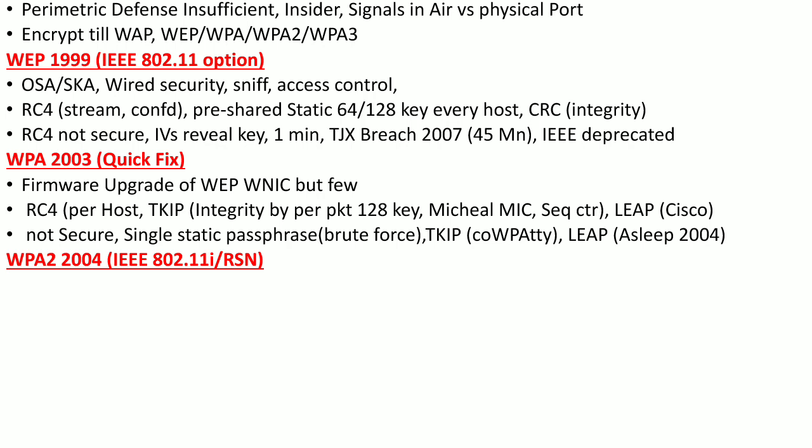WPA2 was introduced in 2004. It is not an enhancement to WPA but a completely different protocol, known as 802.11i or Robust Security Network (RSN). WPA2 uses a 128-bit AES key as part of CCMP. AES is a block cipher, whereas RC4 is a stream cipher — stream ciphers are more efficient but less secure than block ciphers.